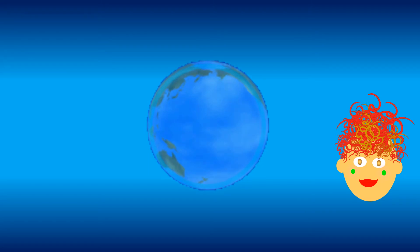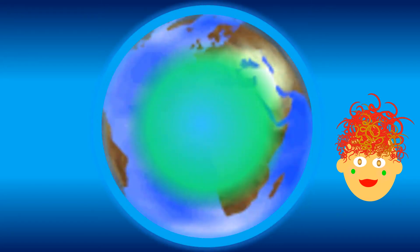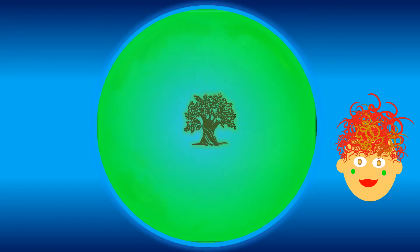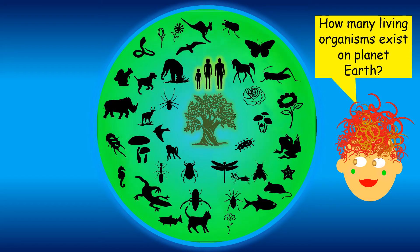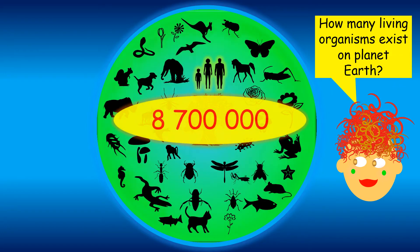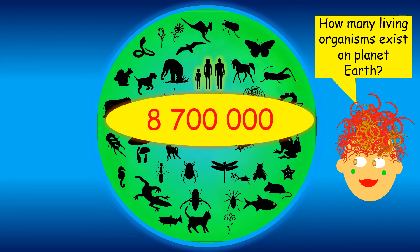We live on planet Earth. Planet Earth is unique because it supports life. Have you ever wondered how many living organisms exist on Earth? Scientists estimate that there are 8,700,000 living organisms on Earth. That is a huge amount of living organisms.